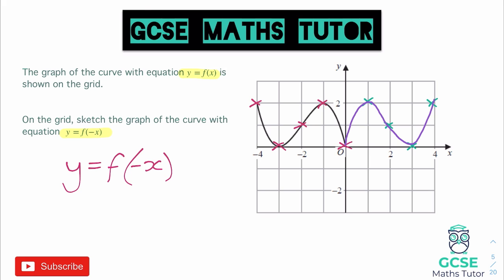What's actually happened in terms of a transformation — it's not been translated, but it has been reflected. This particular transformation reflects it in the y-axis. You can also have y equals minus f of x, and that reflects it in the x-axis because it changes the signs of the y coordinates. So this graph transformation does a reflection in the y-axis. I hope you found that useful — check out the video in the description for more, and I'll see you for the next one.